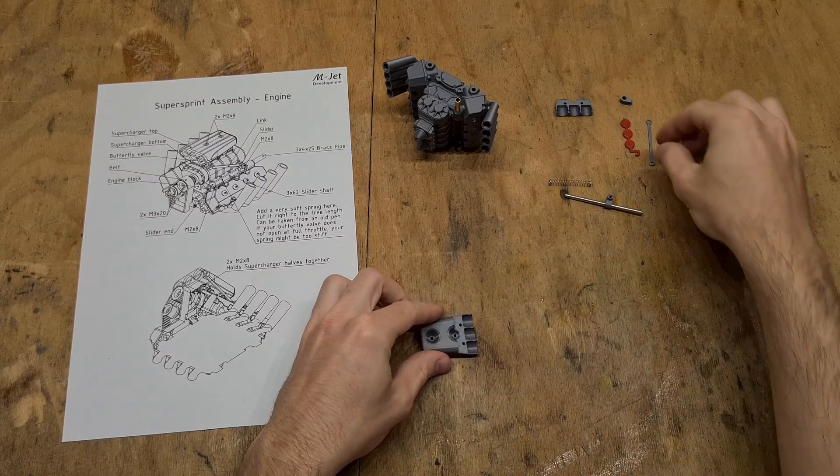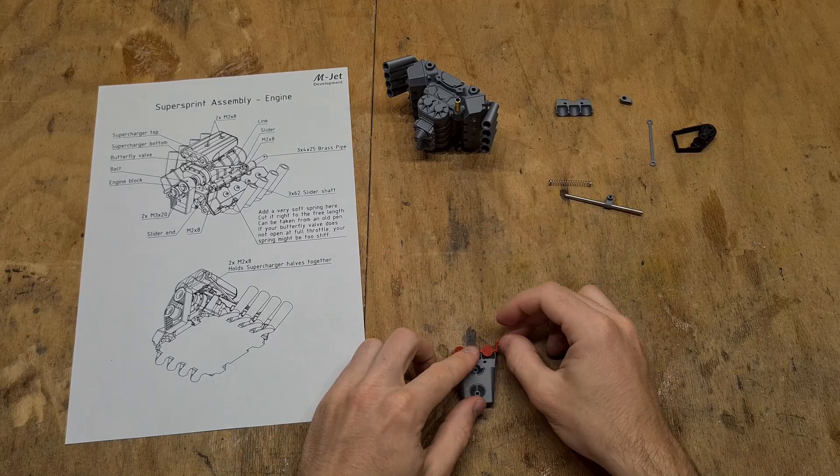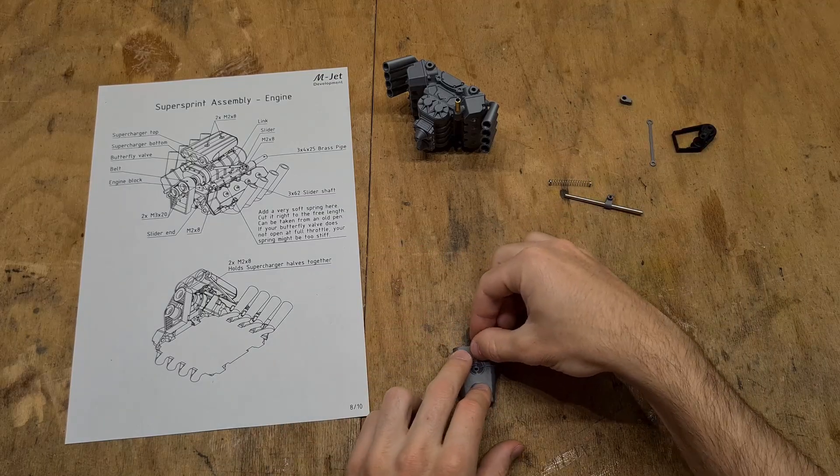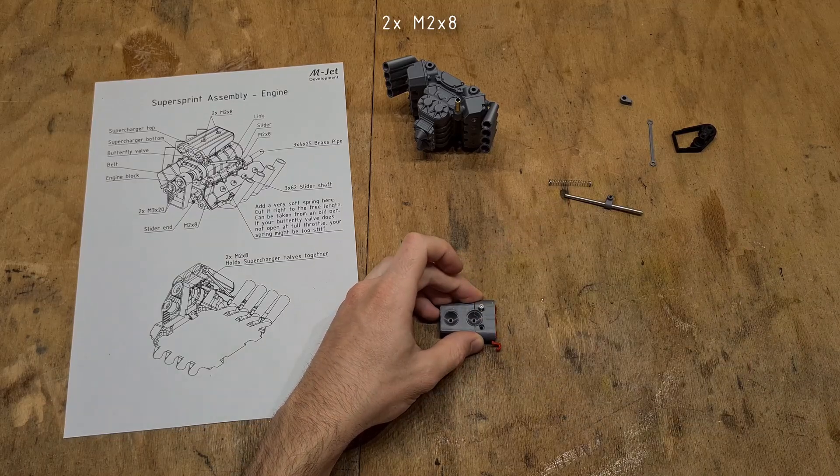Let's continue by assembling the supercharger intake with the butterfly valve. Pay attention to the correct orientation of the lever. From this view it should be on the right. Use two M2x8 to secure everything.